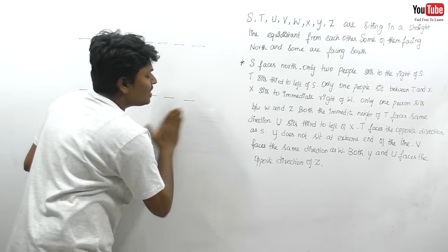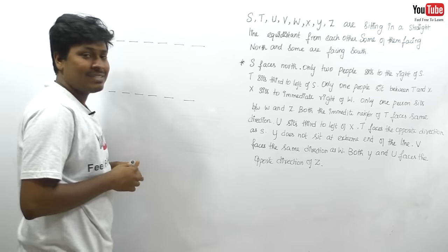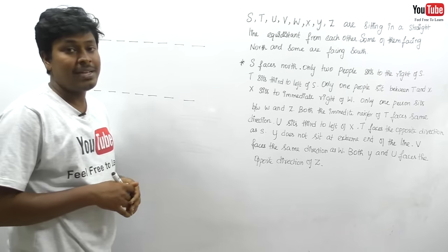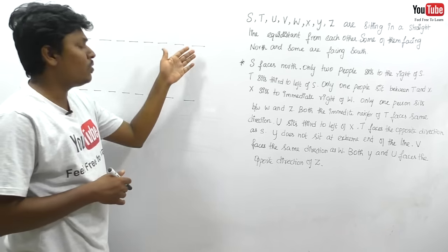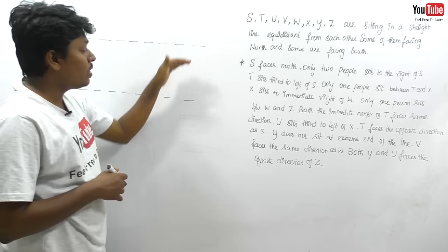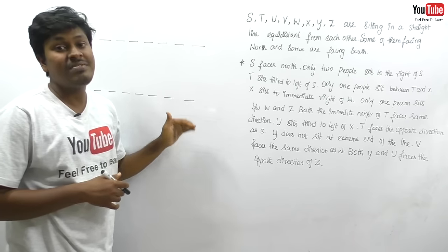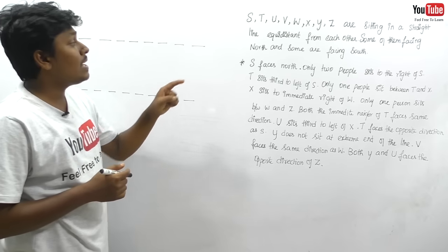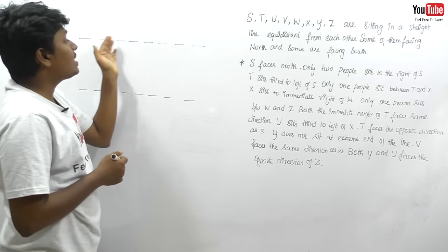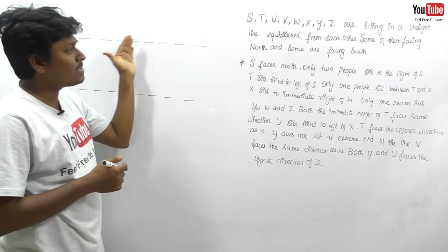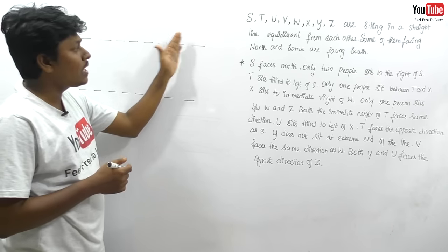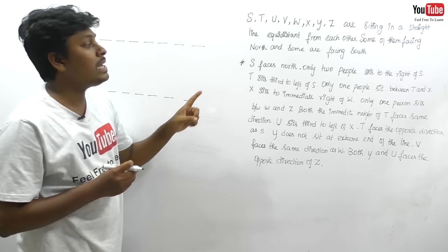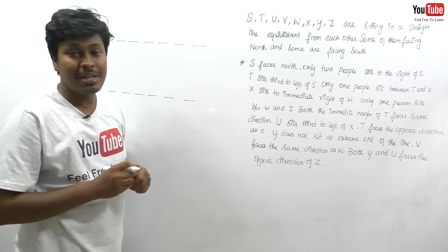Let me solve this question. There are 8 persons: S, T, U, V, W, X, Y, Z. Using my methodology of 2 conditions — the best way to solve all arrangement topics — they are sitting in a straight line where some face north and some face south. S faces north and only 2 people sit to the right of S.